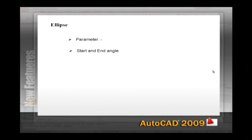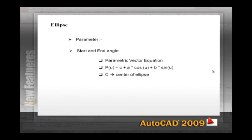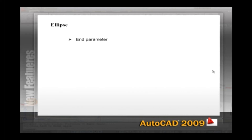Parameter requires the same input as start angle but creates the elliptical arc using a parametric vector equation: P(U) = C + A * cosine(U) + B * sine(U), where C is the center of the ellipse and A and B are its major and minor axes respectively. End parameter defines the end angle of the elliptical arc using a parametric vector equation. The start parameter option toggles from angle mode to parameter mode, controlling how the ellipse is calculated. Included angle defines an included angle beginning at the start angle.